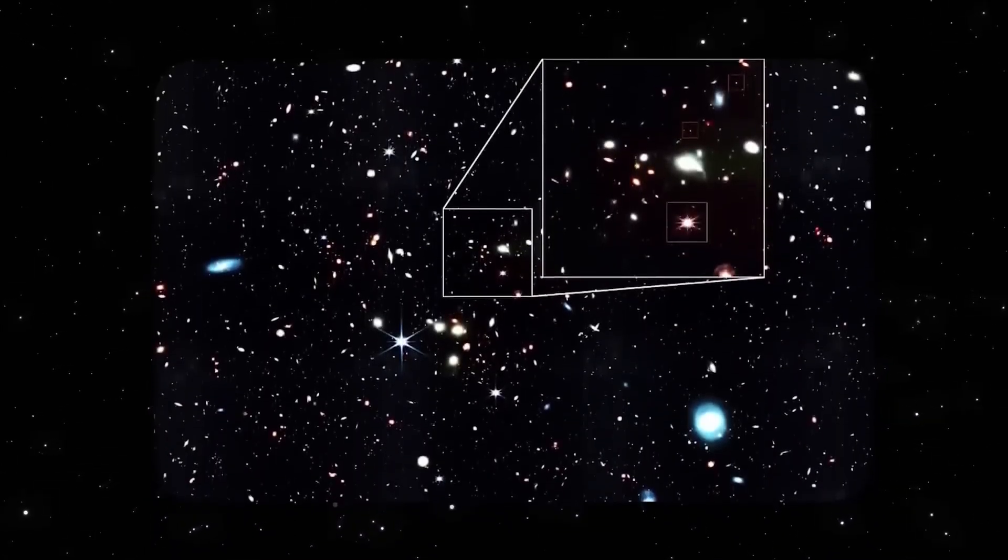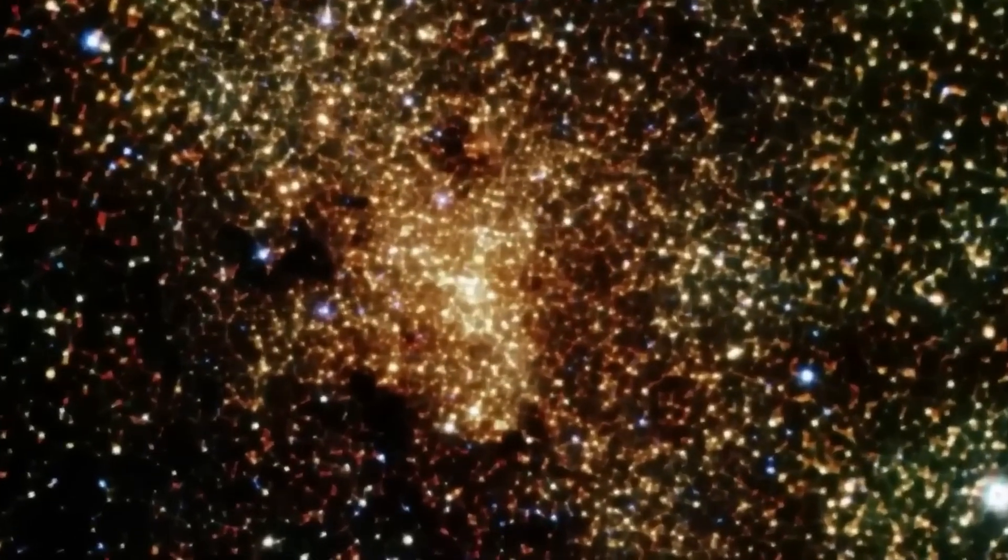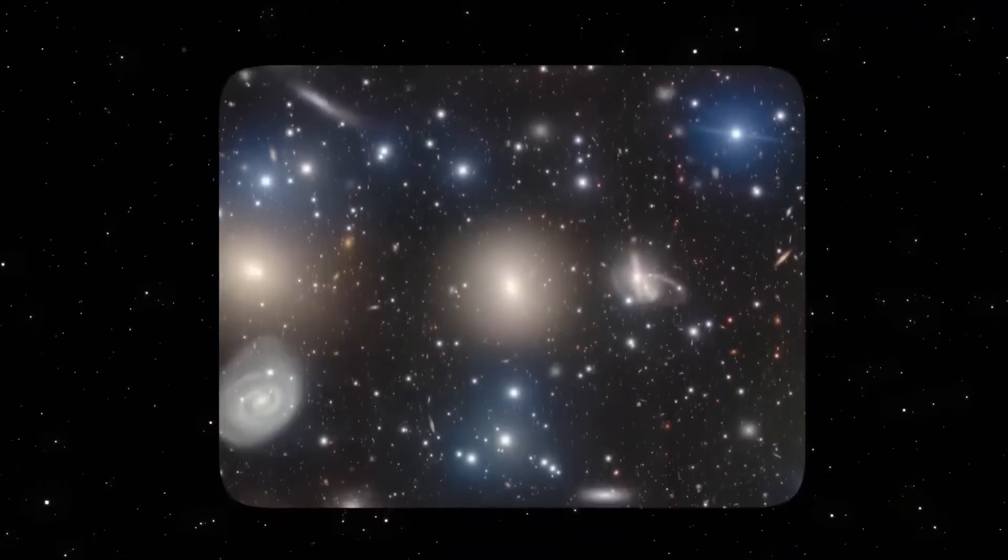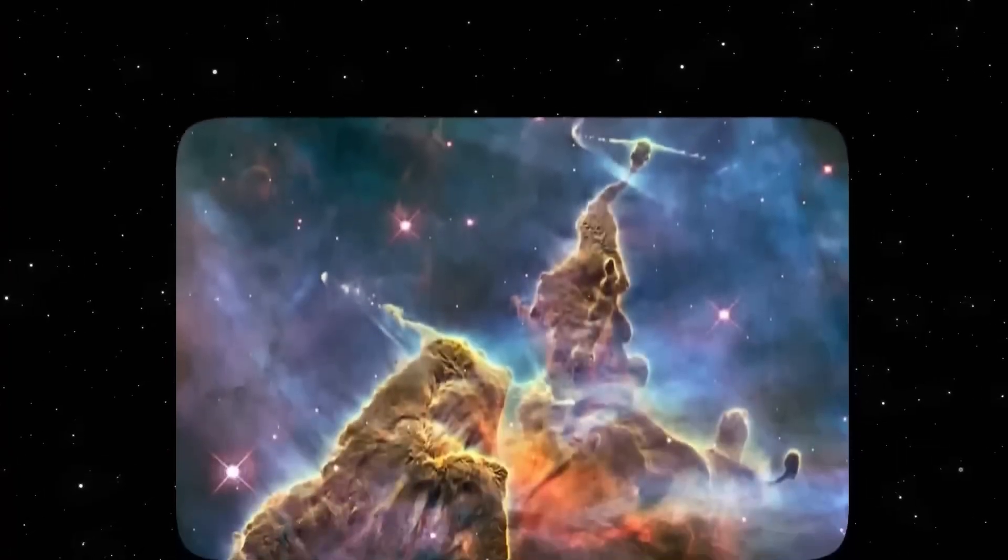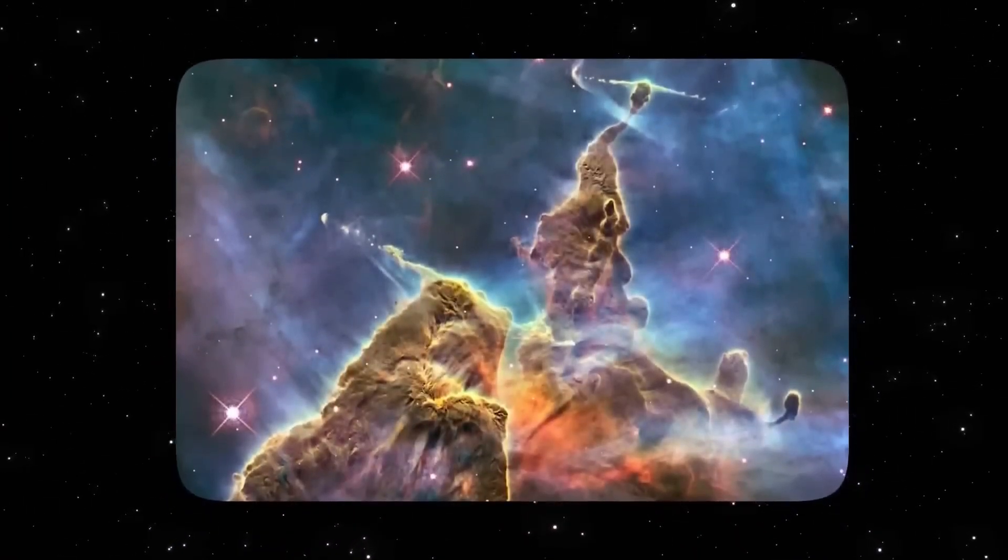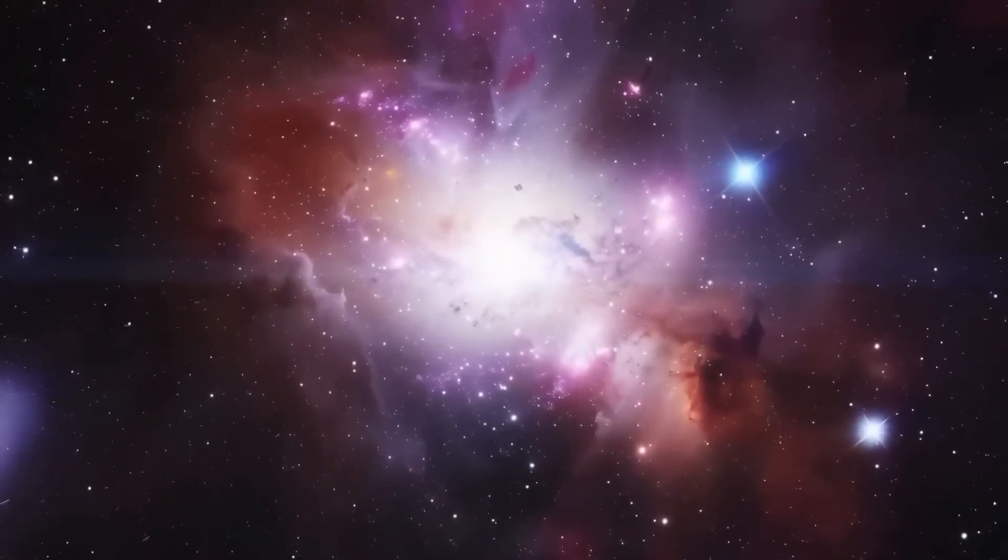Binding the universe together are cosmic filaments, enormous threads of gas, dust, and dark matter that stretch across billions of light years. These filaments form a web-like structure that links galaxies and clusters into an intricate cosmic network. The universe's matter is not evenly distributed.